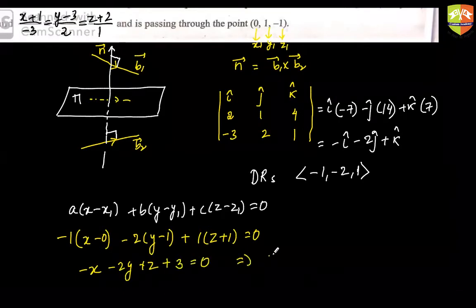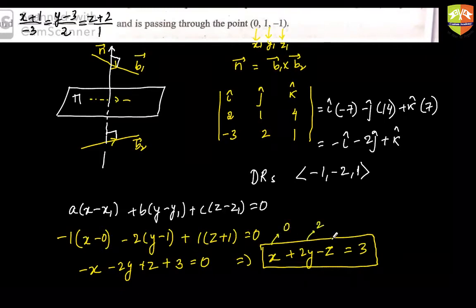So expand it, it becomes -x - 2y + z + 3 + 1. So this becomes your answer. You can write it as x + 2y - z = 3 also. And never be complacent. When you get your answer, always quickly verify. Does (0, 1, -1) satisfy it? Let's check. 0, 1 will give you 2, minus minus 1 will give you plus 1. So 0 + 2 + 1 = 3. Yes, it is very fine. So your answer is correct.